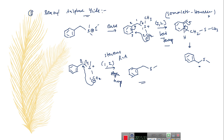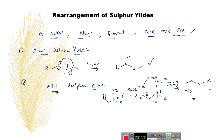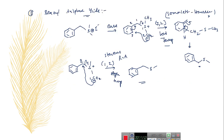To summarize: alkyl sulfur ylides rearrange via 1,2 rearrangement and give organosulfides. Allyl sulfonium ylides generally undergo 3,2 sigmatropic rearrangement. Benzyl sulfur ylides can undergo both 3,2 sigmatropic rearrangement and 1,2 sigmatropic rearrangement, depending on the temperature. The other case to consider is aza sulfur ylides.